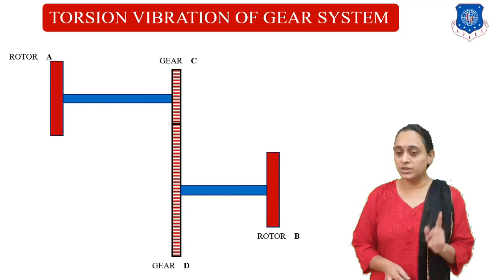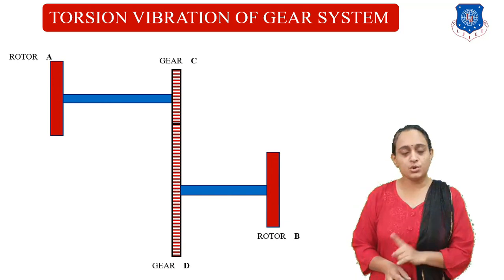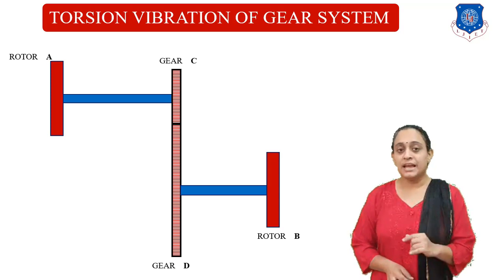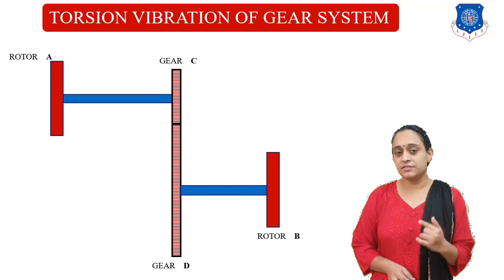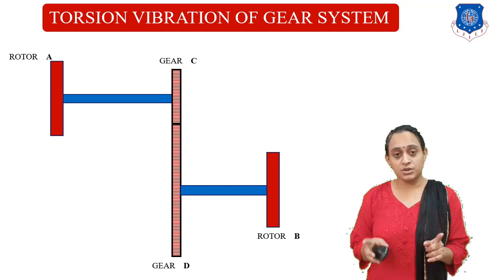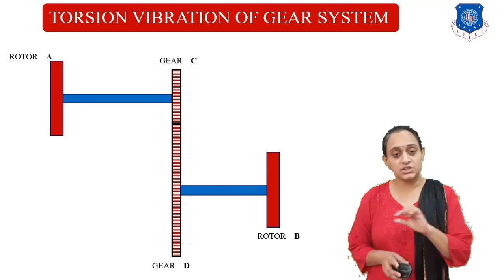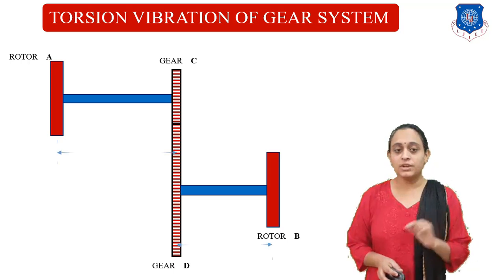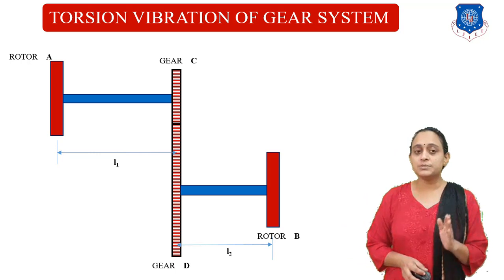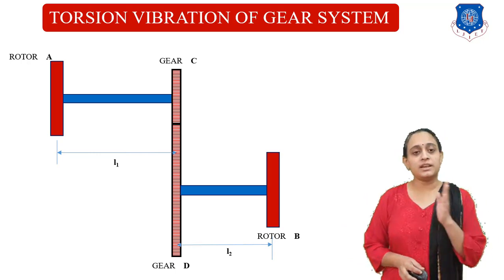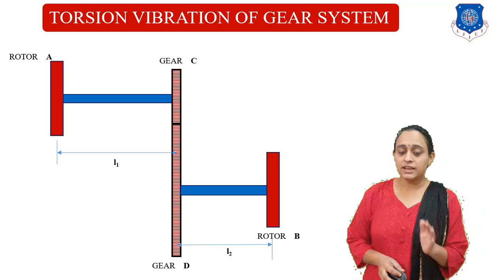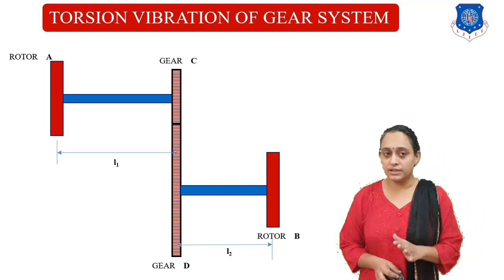We have rotor A and rotor B. Rotor A is connected with gear C, and gear C is connected with gear D. Gear D and rotor B are connected with the shaft. For this system, the distance between rotor A and gear C is L1, and between gear D and rotor B is L2.